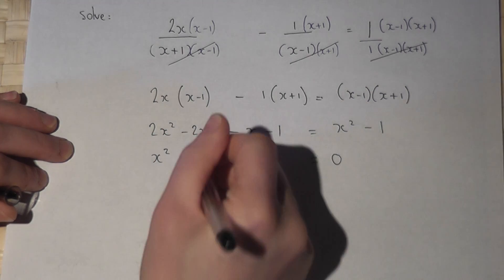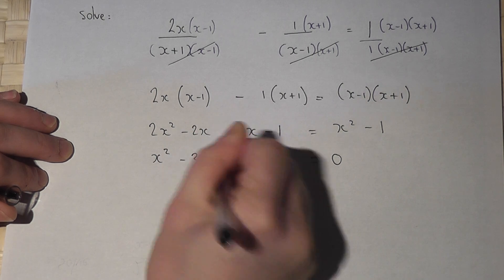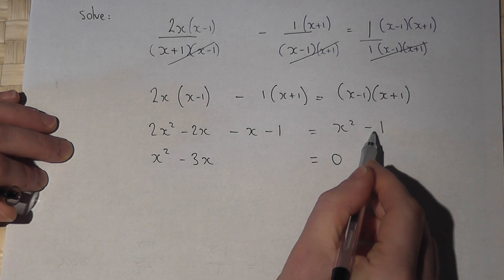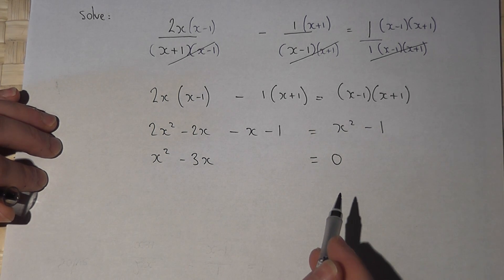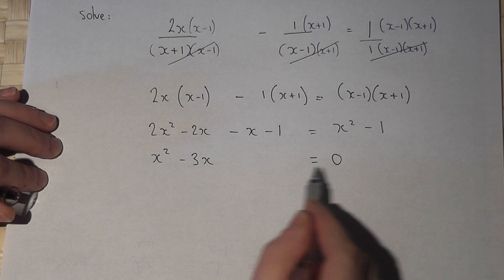Minus 2x take away x is minus 3x. I'll then add 1 to both sides. That becomes 0. That also becomes 0. So the equation is x squared minus 3x equals 0.